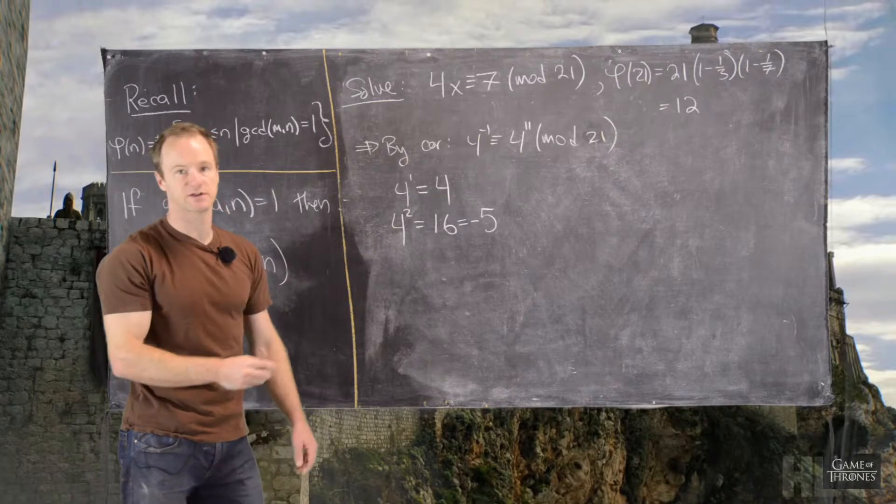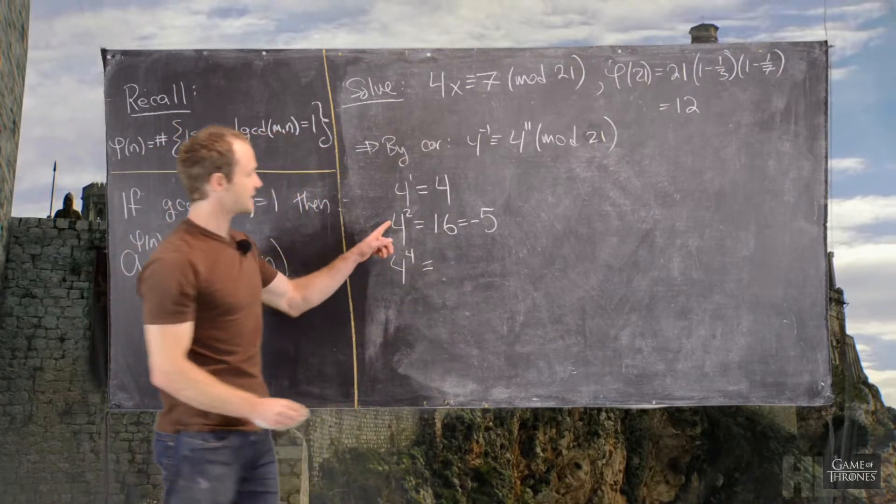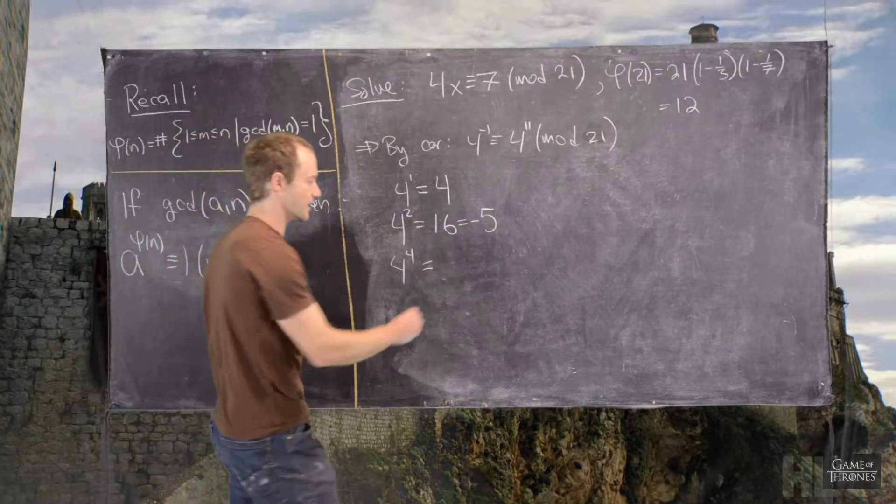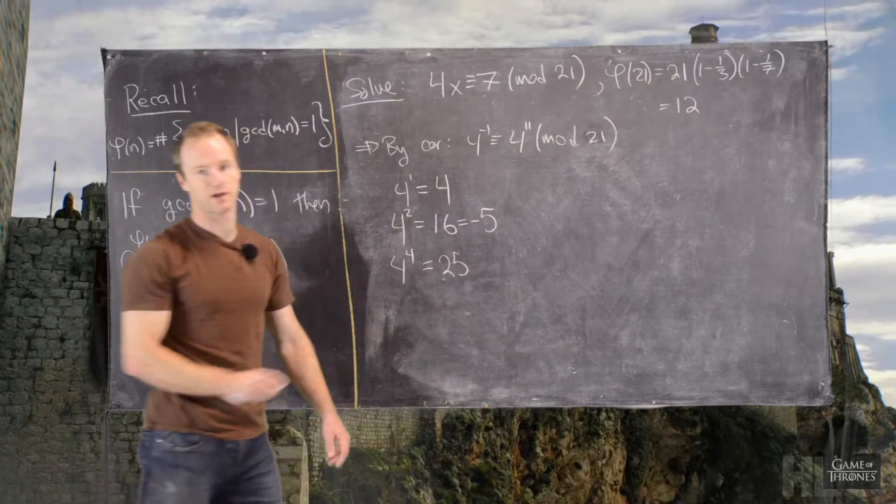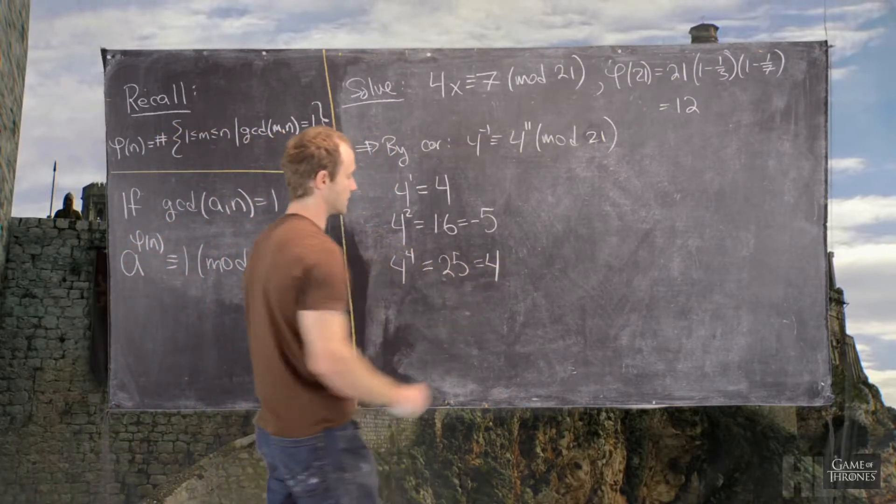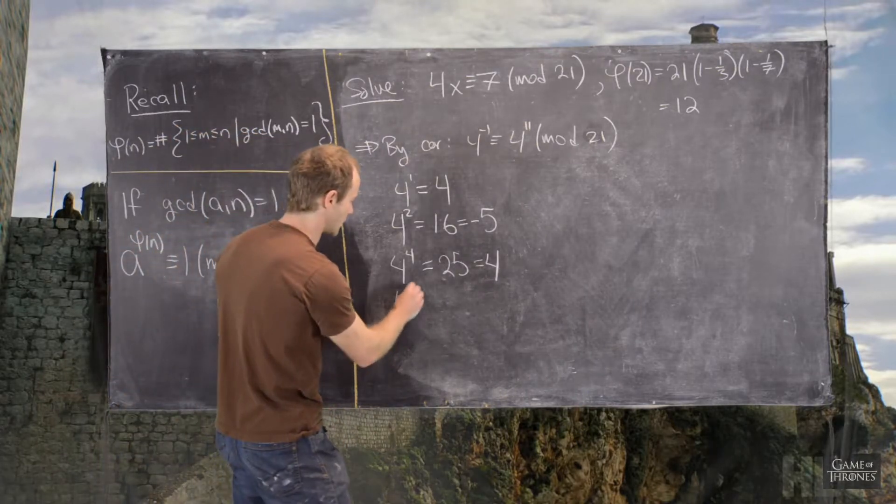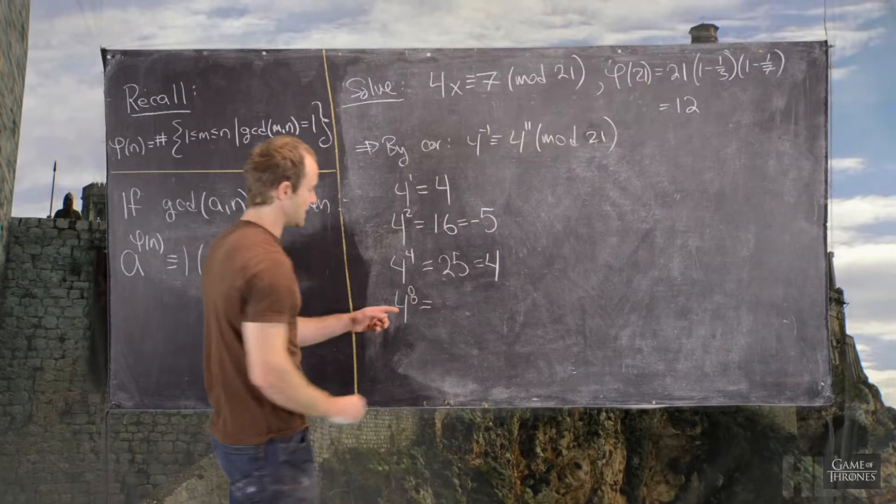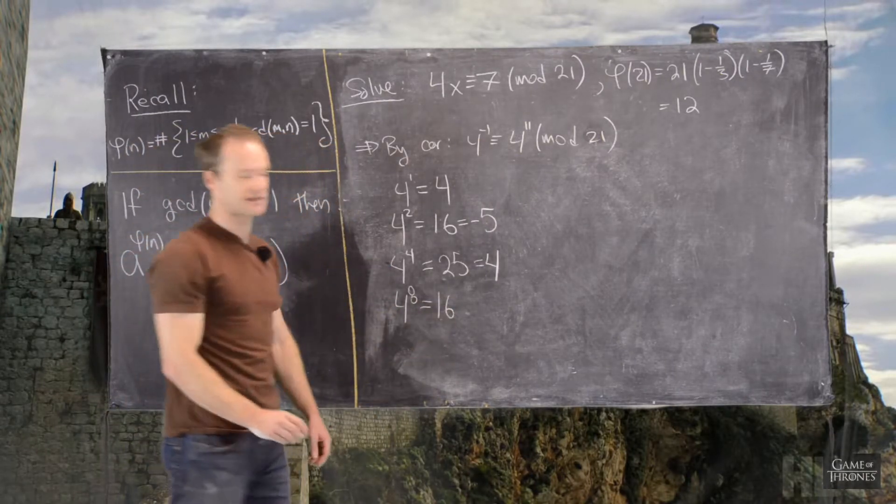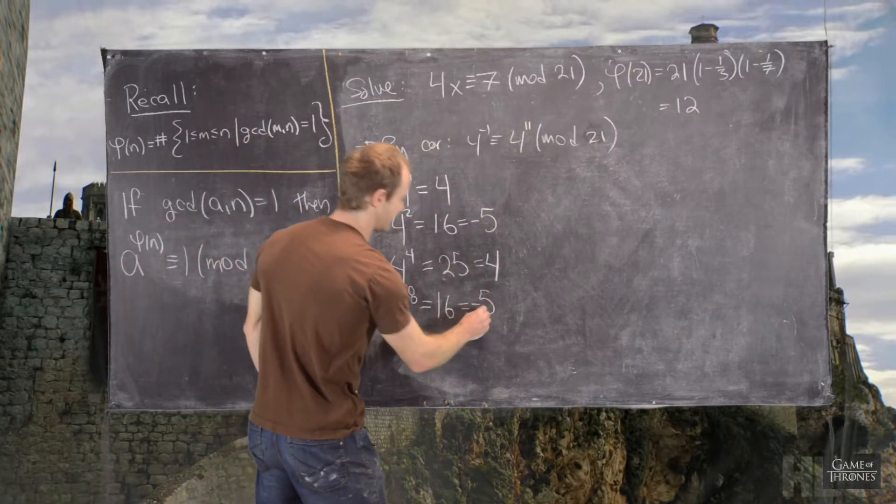And now we can square this quite easily. So, that means 4 to the 4th is the same thing as 4 squared squared, which is negative 5 squared, which will be 25 mod 21. But notice that 25 is back at 4. Great. And then finally, 4 to the 8 will be 4 to the 4th squared. So, in other words, that is 16, which means we might want to write as negative 5 again.